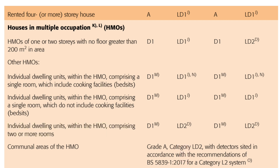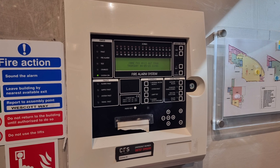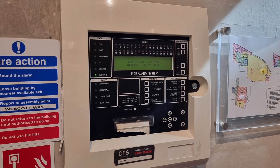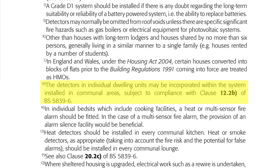However, looking at the bottom of the HMO list, we find that in communal areas of an HMO, we would need a Grade A, Category LD2 system with detectors cited in accordance with the recommendations of BS5839-1 of 2017 for a Category L2 system — so a system comprising the full central control and indicating equipment with separate sounders. Does this mean we have two separate systems running side-by-side in the HMO? Well, note M of the table tells us that the detectors in individual dwelling units may be incorporated within the system installed in communal areas, subject to compliance with Clause 12.2b of BS5839-6. So we'd probably just use the same system, though theoretically there could be two separate systems in place.